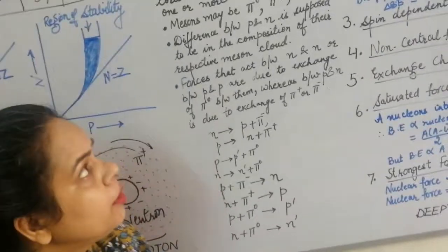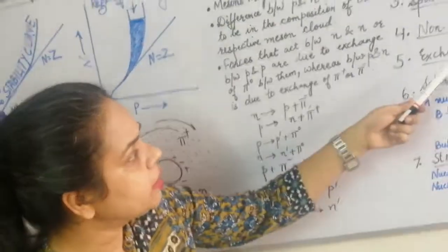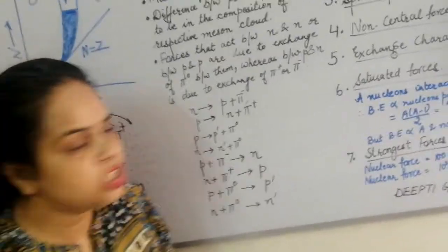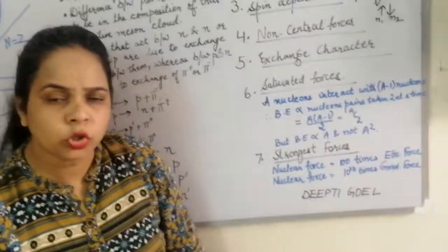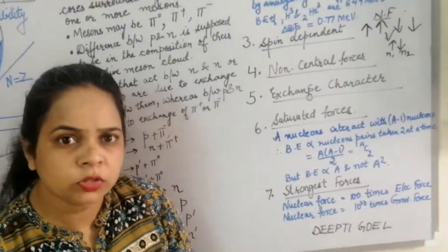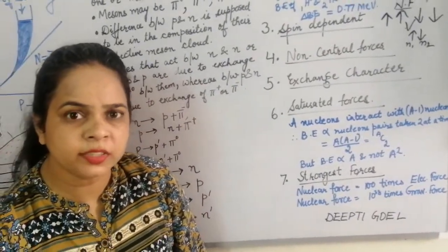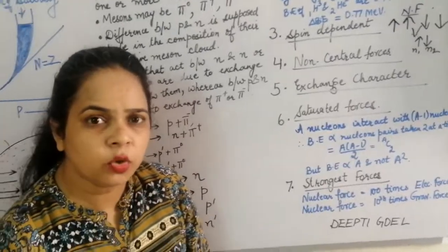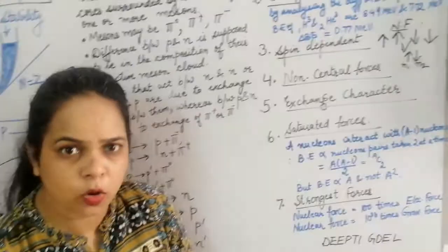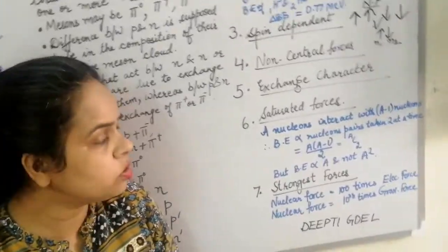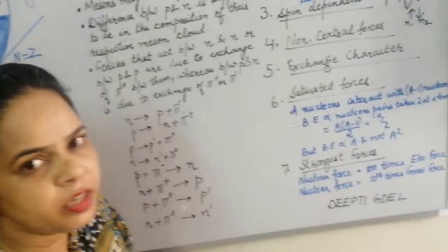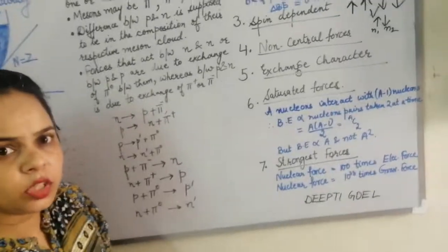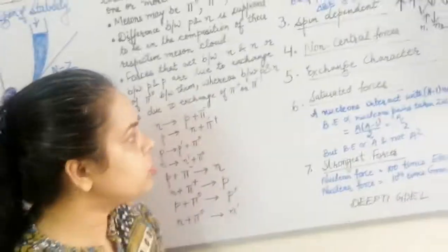The fifth property is that nuclear forces exhibit an exchange character. Protons, neutrons, and any nucleon are held together inside the nucleus by the exchange of mesons. The nuclear forces exhibited the exchange character due to these meson particles.